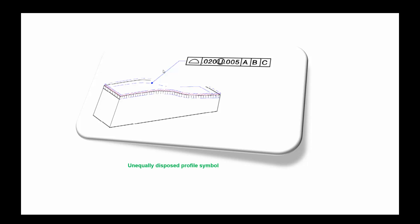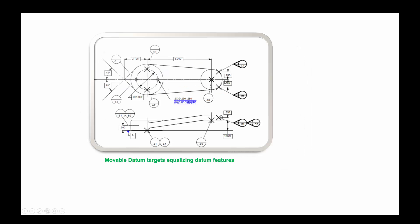Next is the unequally disposed profile symbol. If you specify unequally disposed profile, that typical tolerance will be applied over that surface, but it is not equally disposed — the tolerance is not the same everywhere with respect to datums A, B, and C. You can use the profile symbol and it is applied all over, but it is not equally disposed. You can see on this particular side it is not applied there but it is applied here, and you can designate that using the U symbol.